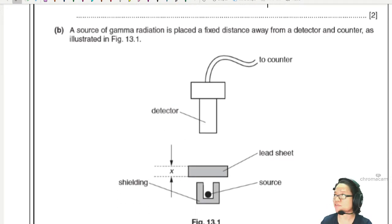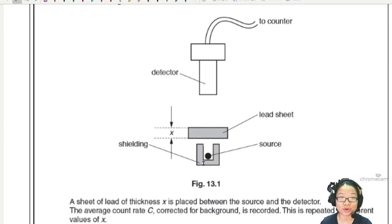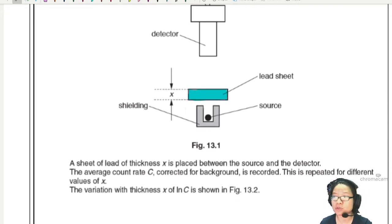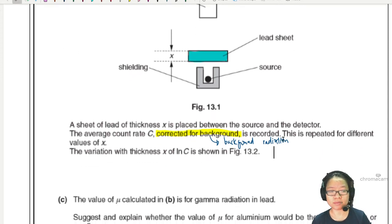Part B: A source of gamma radiation is placed a fixed distance away from the detector as shown in figure 13.1. There's a detector here detecting the radioactive source. There's a lead sheet here blocking some of the gamma radiation. The lead sheet of thickness X is placed between the source and the detector. The average count rate C corrected for background is recorded. I should explain what is corrected for background. When we say corrected for background, around you there is already some radioactive particles, a little bit of background radiation. There is always background radiation because around you there are so many different isotopes and some of them are radioactive.